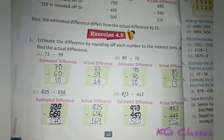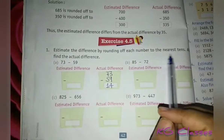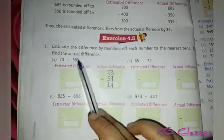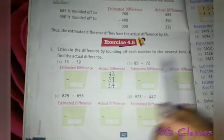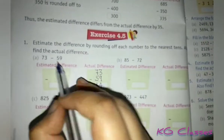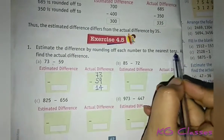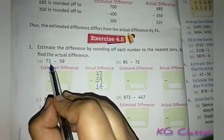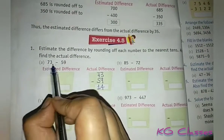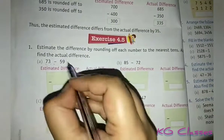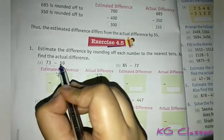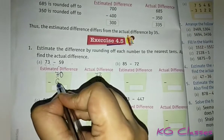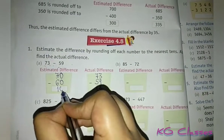First question: estimate the difference by rounding off each number to the nearest 10, and also find the actual difference. The actual difference: 73 minus 59 equals 14. Now for the estimated difference, we round 73 — it falls between 70 and 80, and the ones digit is 3 which is less than 5, so 73 rounds to 70. For 59, it rounds to 60. So the estimated difference is 70 minus 60 equals 10.